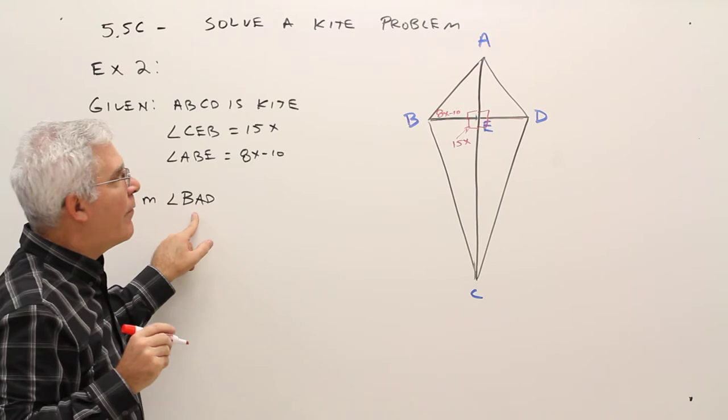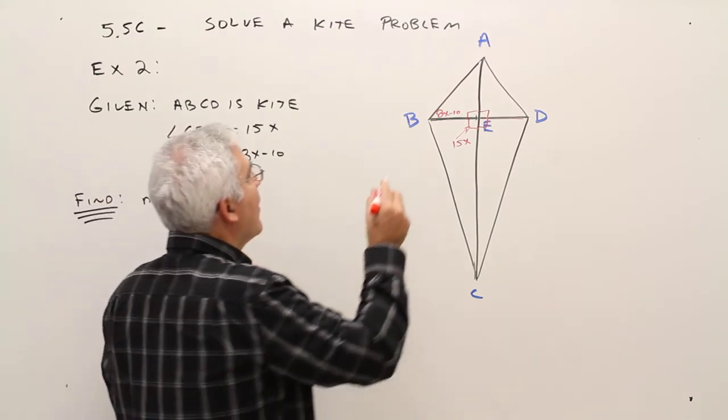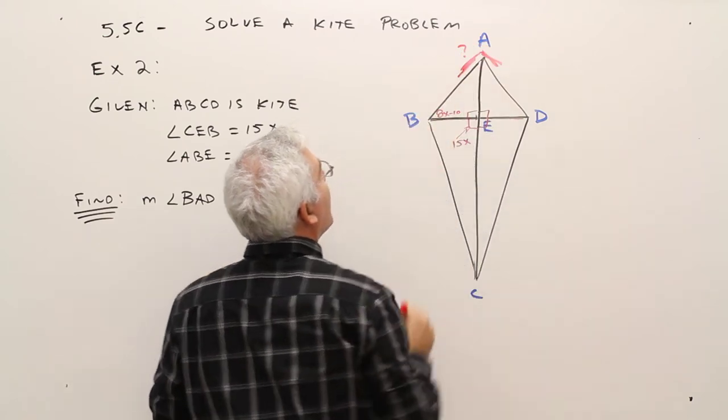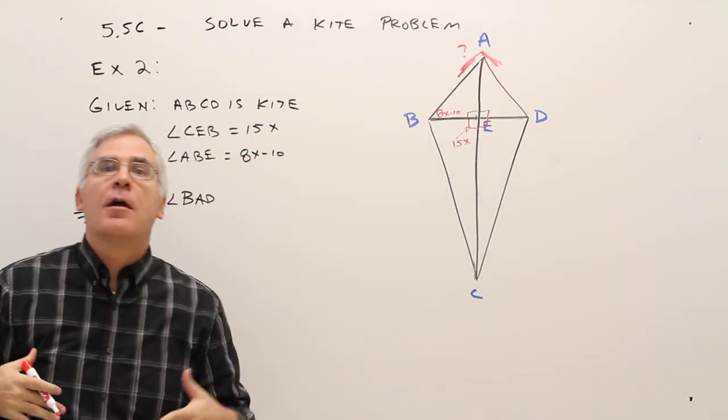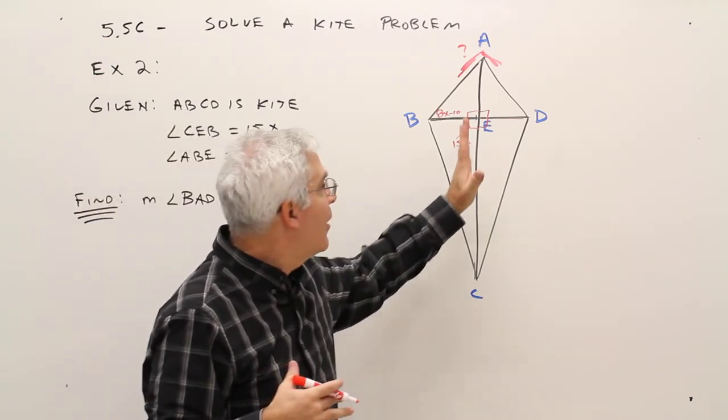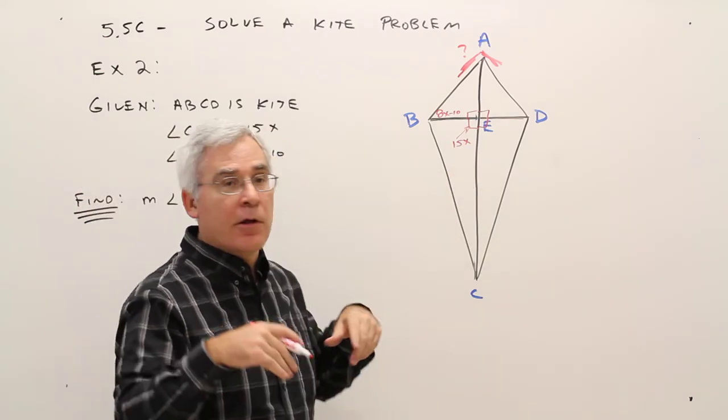Find the measure of angle BAD. That's going to be this angle right there. So I'll put a question mark. I'm going to use some of my properties of kites. I've already used one. The diagonals are perpendicular.